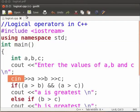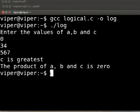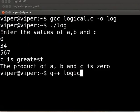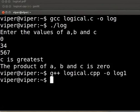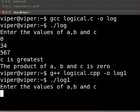Click on save. Make sure the file is saved with extension dot cpp. Open the terminal by pressing ctrl, alt and t keys simultaneously. To compile the program, type g++ logical dot cpp space minus o space log1 press enter. To execute, type dot slash log1 press enter. I will enter the values as 0, 34 and 567.